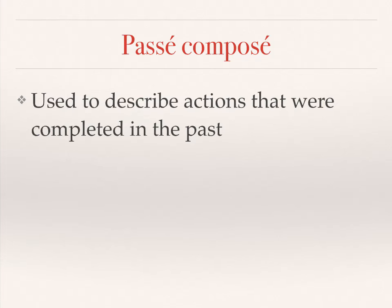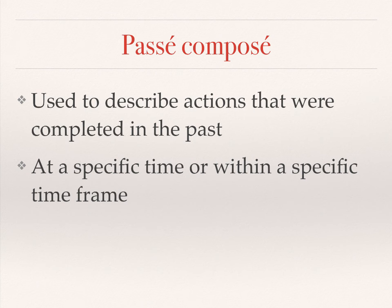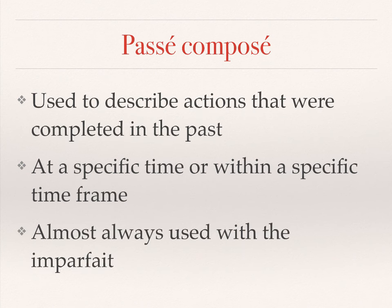What is the passé composé? Well, this is a past tense that is used in French a lot to describe actions that were completed in the past. More specifically, these actions were performed at a specific time or happened within a specific time frame. This is important to note because the most difficult part of the passé composé is not the tense itself — it's the fact that it is almost always used in combination with the imparfait in the text. These two past tenses are used together and describe different actions, and this is something that we will talk about again in the future.